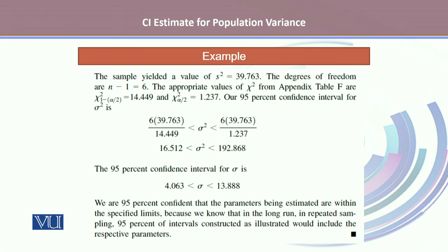Whereas the 95% confidence interval for the population standard deviation is 4.063 as the lower confidence limit and 13.888 as the upper confidence limit.